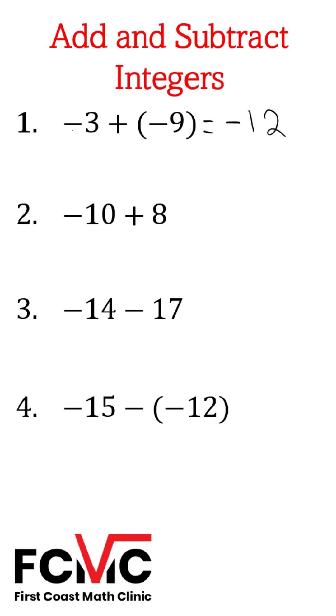Number 2, we're adding two numbers of opposite signs, negative 10 plus 8. When we add two numbers of opposite signs, we want to take the difference of the two numbers. The difference of 10 and 8 is 2. Then we want to take the sign of the number with the larger absolute value. Which of these two numbers is further from 0? That's going to be the negative 10. So this 2 is going to be negative.